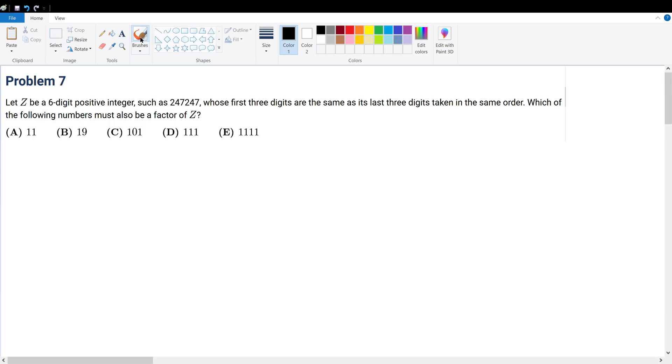Problem seven. Let Z be a six-digit positive integer such as 247,247, whose first three digits are the same as its last three digits taken in the same order. Which of the following numbers must also be a factor of Z?